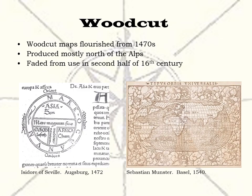Most of the earliest maps were made by this process. Woodcut prints were first made in Asia as early as the 9th century, with the earliest known European woodcut from 1418. The first woodcut map came about a half century later — Isidore of Seville's map from 1472. Since woodcuts were printed on the same presses used for text, they tended to appear in printed books. Woodcut maps were produced mostly north of the Alps, in the Rhine Valley, Bavaria, and Swabia, and they flourished from about the 15th until the middle of the 16th century, after which they began to fade from use.